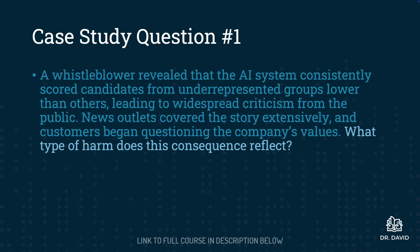Question number one builds on the scenario we just read. A whistleblower revealed that the AI system consistently scored candidates from underrepresented groups lower than others, leading to widespread criticism from the public. News outlets covered the story extensively and customers began questioning the company's values. What type of harm does this consequence reflect? From those choices, you would select the harm that this consequence best reflects. In this example, we have our base scenario followed by three questions that are based on it — so this is question one.